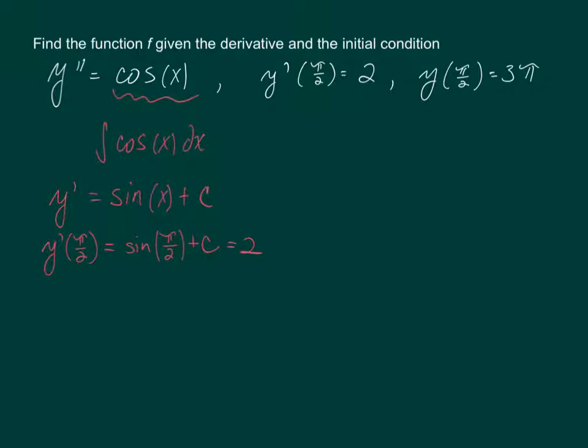So now that we have this equation here we can solve it for C. In order to solve this equation for C you need to know that sine of pi over 2 is in fact 1 plus C equals 2. And that will lead you to the conclusion that C equals 1.